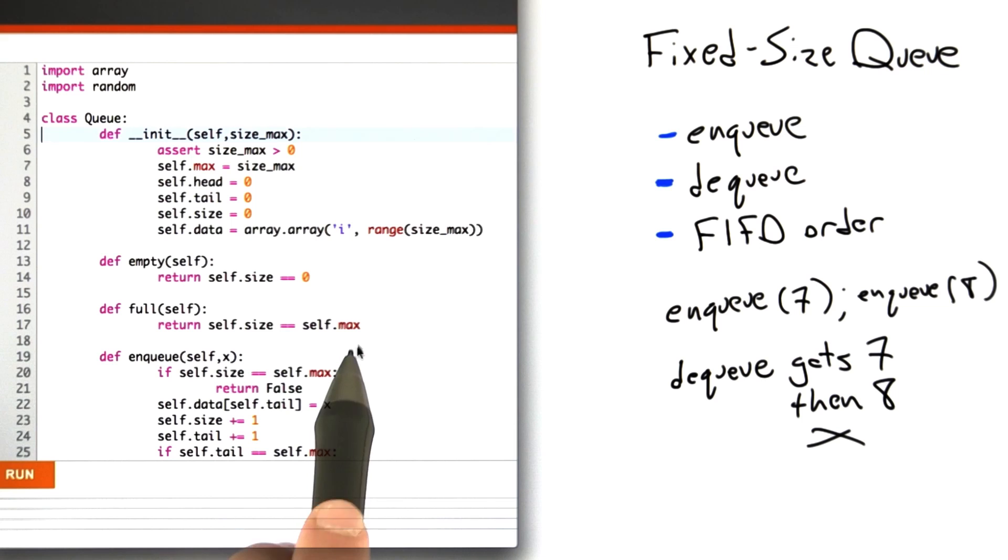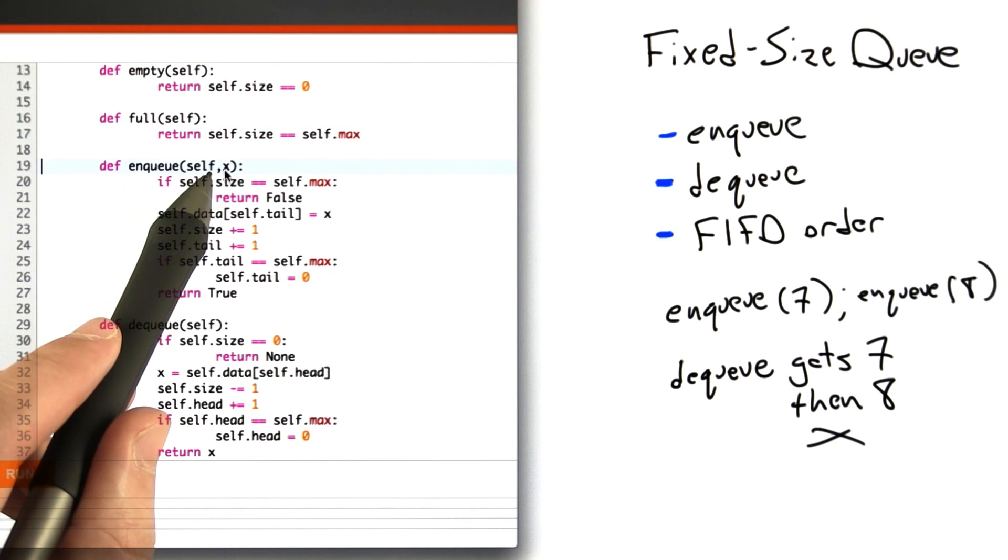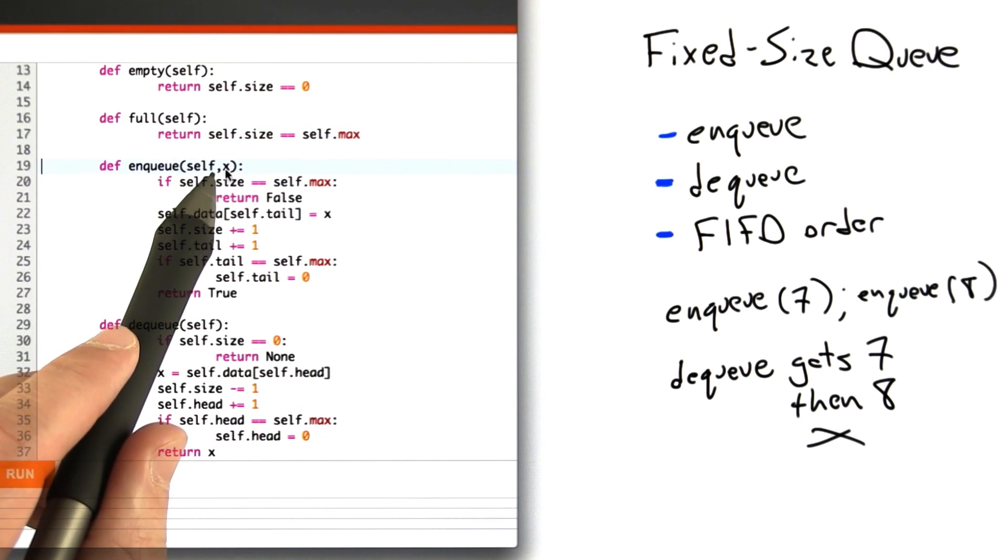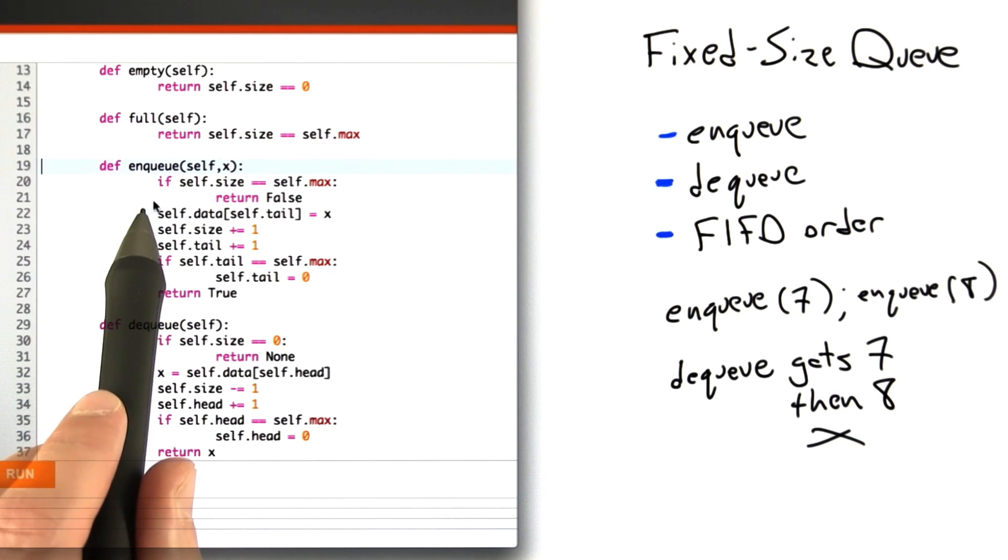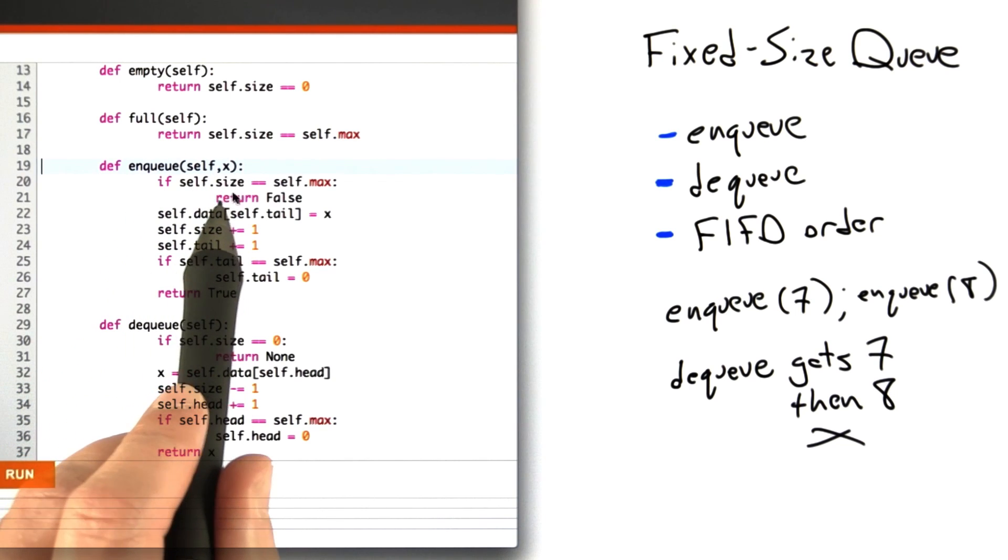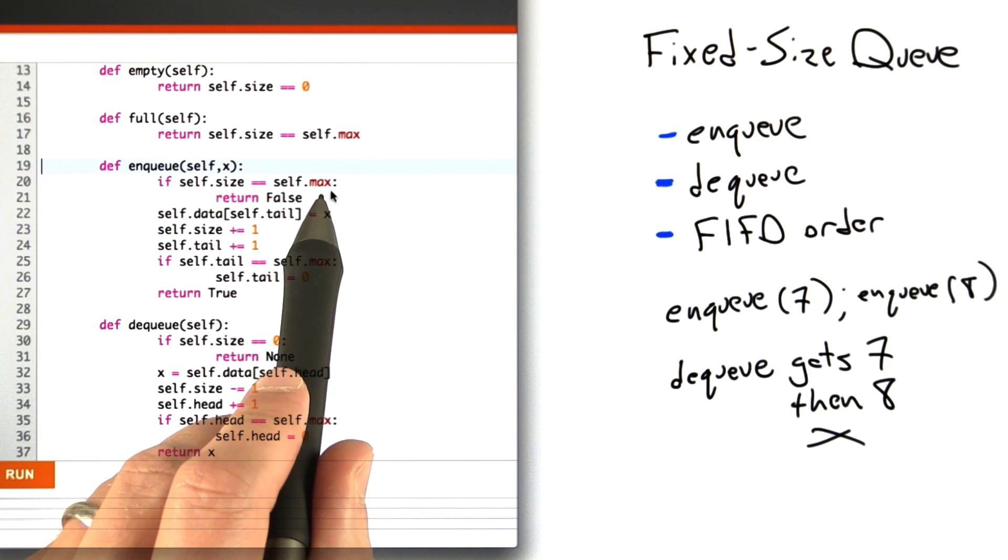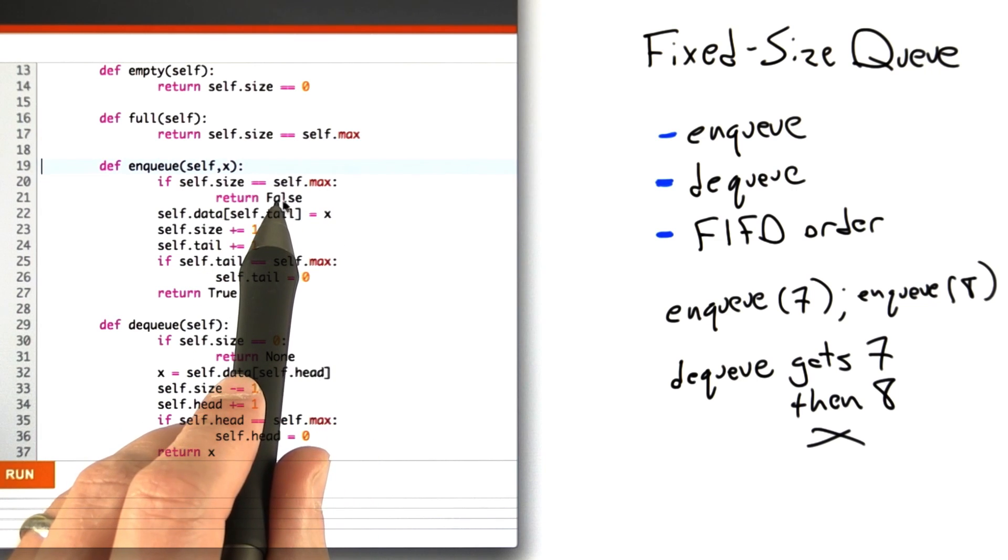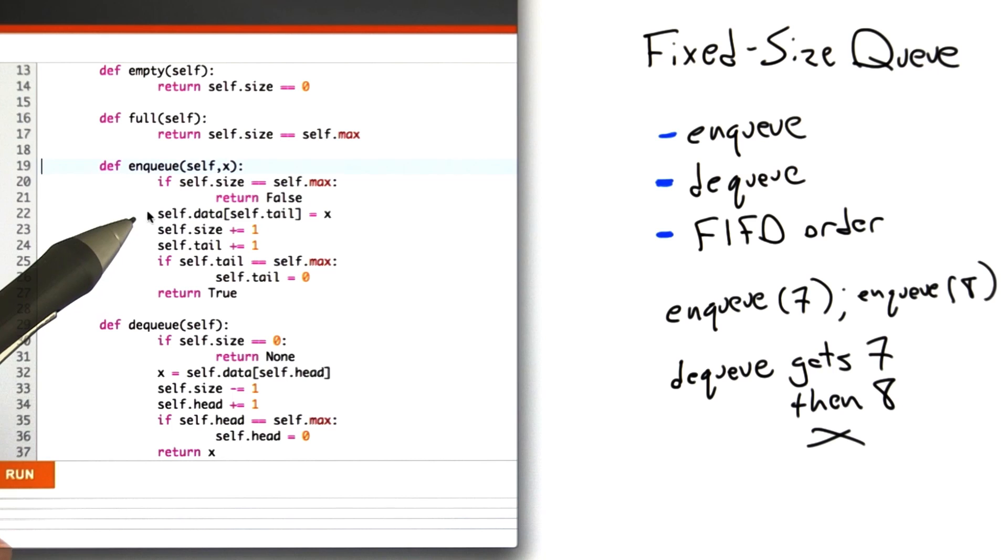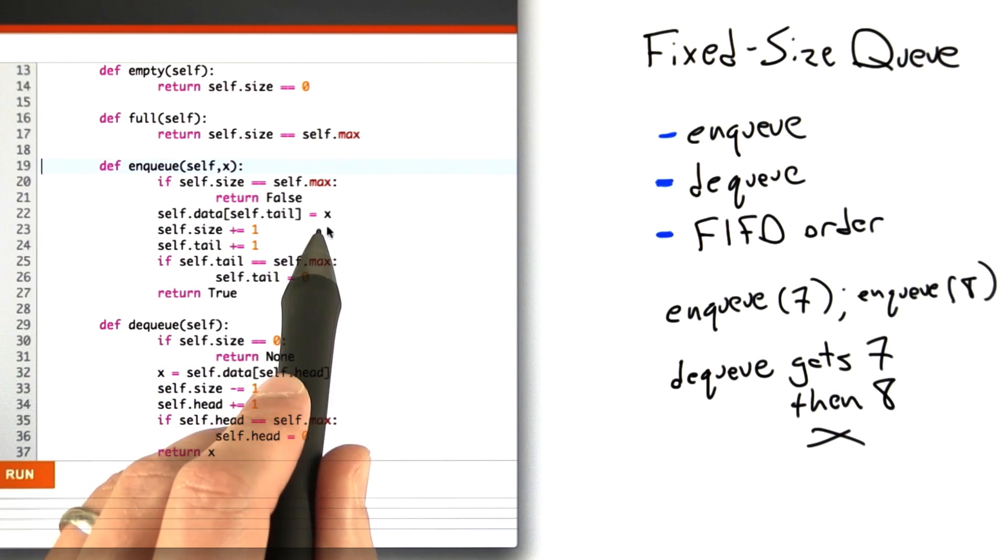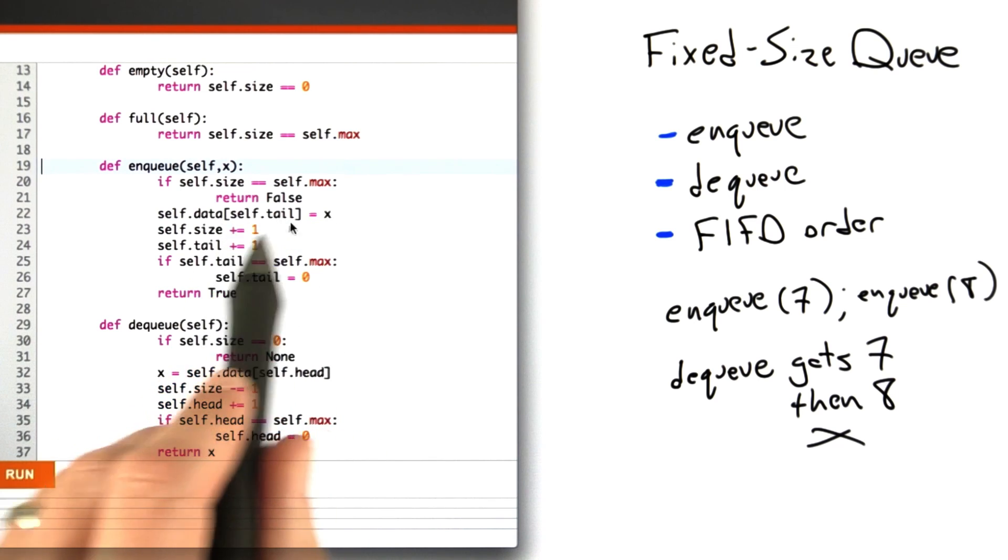Now let's look at a couple of routines that are slightly trickier. The enqueue method takes an argument x, an integer we want to add to the queue. First it checks if the current size equals the maximum size. If so, the queue is full and we return false. If we pass this test, the queue is not full and we have room, so we put the data item into the queue at the location pointed to by the tail.